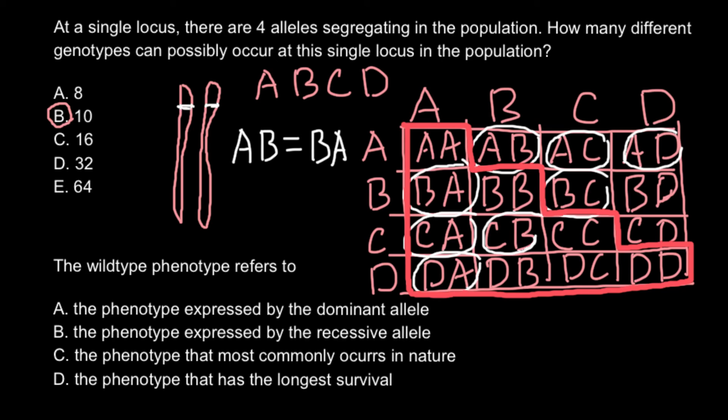And our next question is: The wild-type phenotype refers to... Answer A: The phenotype expressed by the dominant allele. And this is not always the case, because in the wild-type phenotype we can find also recessive alleles as long as dominant alleles. And answer B: the phenotype expressed by the recessive allele. And as I said, we can find both recessive and dominant alleles in wild-type.